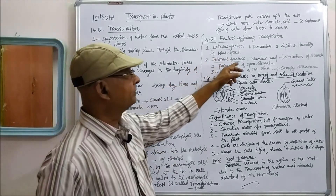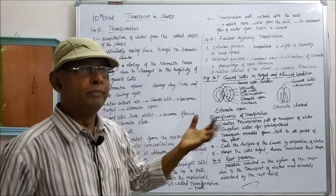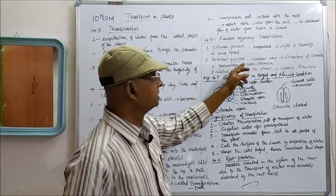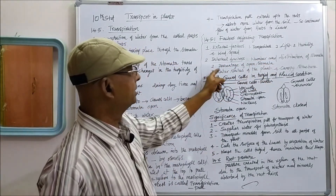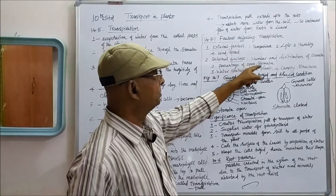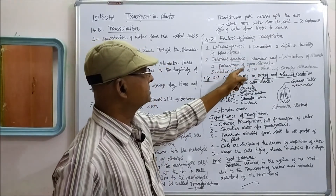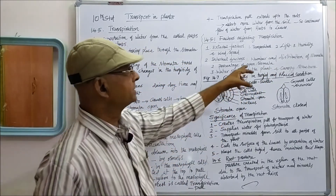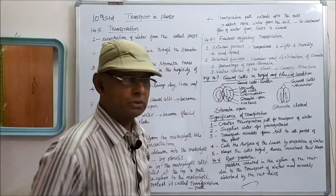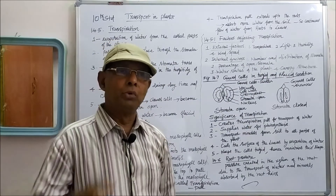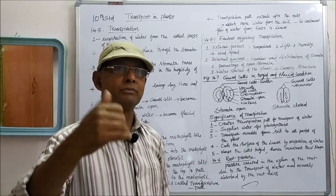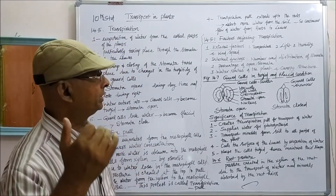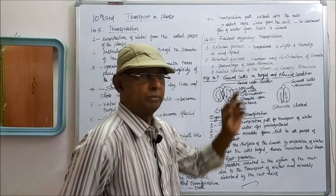Internal factors are those within the plant. These include: number and distribution of the stomata, percentage of open stomata, water status of the plant, and canopy structure. As far as number and distribution of stomata are concerned, more number of stomata means transpiration will be more; less number of stomata means transpiration will be less. Similarly, when most stomata are kept open, that will evaporate more water through the stomata.